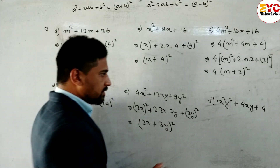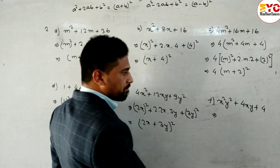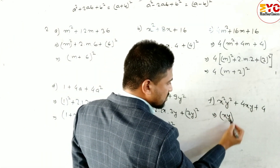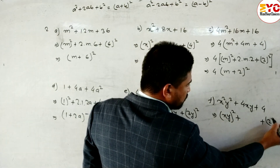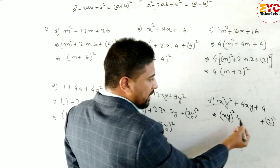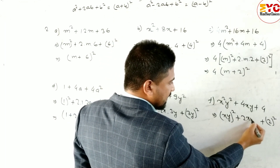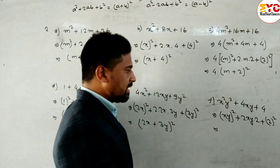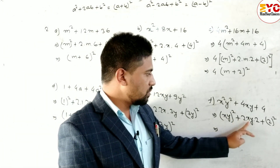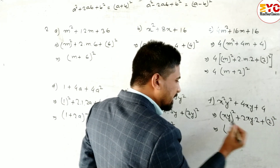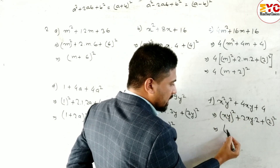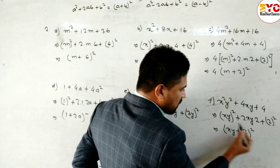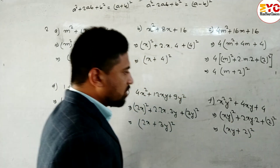For Question 2f: x²y² + 4xy + 4. First term: x²y² = (xy)², last term: 4 = (2)². Middle term 2ab = 2·xy·2 = 4xy. This is in the form a² + 2ab + b², with a = xy and b = 2, so the answer is (xy + 2)².